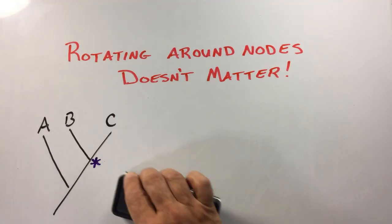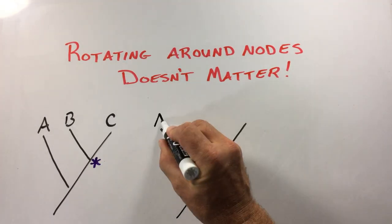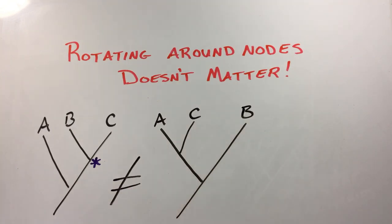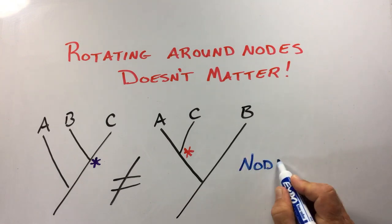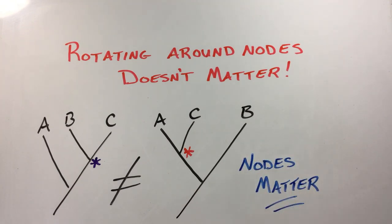Now let's compare the tree on the left with this tree showing a different relationship of branching patterns among A, B, and C. This tree shows a different relationship among the species because A and C share a more recent node with one another than either one does with B. So while rotating around nodes doesn't matter, their sequence does.